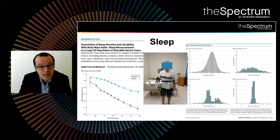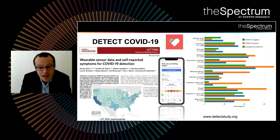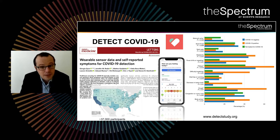We used what we learned from these studies on resting heart rate and sleep to launch DETECT. DETECT is our app-based study for the detection of COVID-19 using wearable data. The app connects to the smartwatch or wearable device of the individual. We have about 37,000 participants within the United States in our DETECT app. Beside the wearable device data, the app is also collecting self-reported symptoms and self-reported test results for COVID-19.